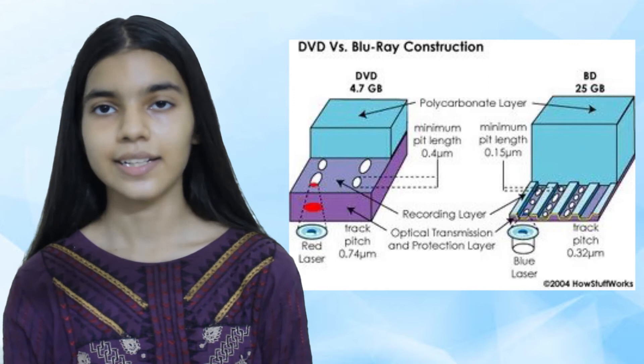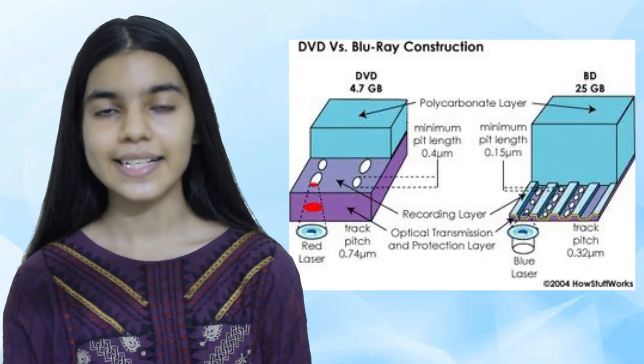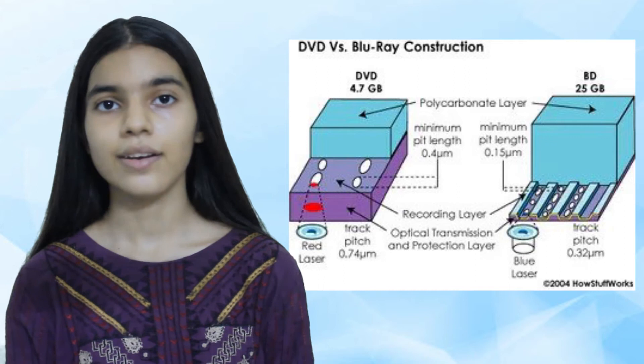Blu-ray disks are a recent replacement for DVDs. A Blu-ray disk can hold 25 to 50GB of data, and a dual-layered Blu-ray disk can hold twice that. Blu-ray disks are random access devices used in the same way as DVD-ROMs, but since they hold more data they are also used to store very high-quality, high-definition (HD) videos. The 'blue' in Blu-ray refers to the blue laser used to read the disk, which uses blue light instead of red light. Blue light has a shorter wavelength than red light used with CDs and DVDs, allowing more data to be placed closer together on a Blu-ray disk.